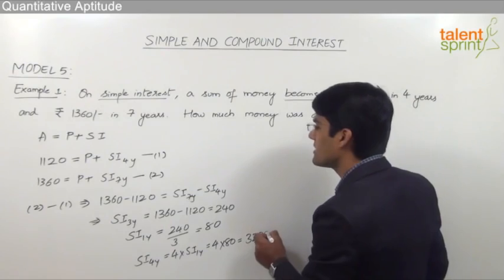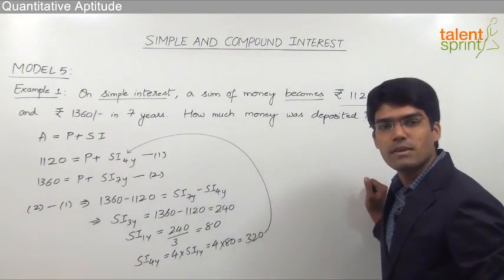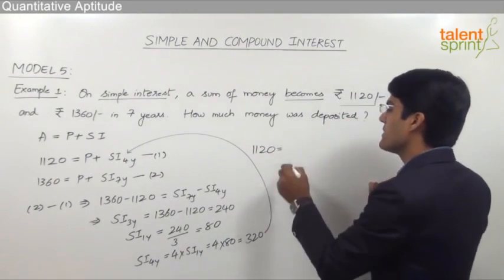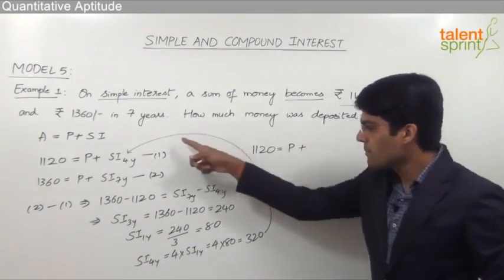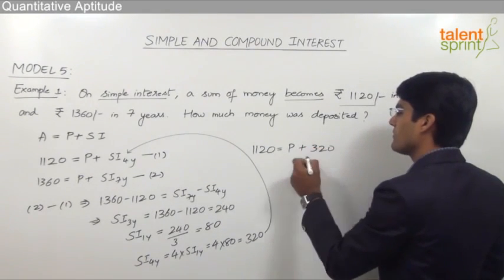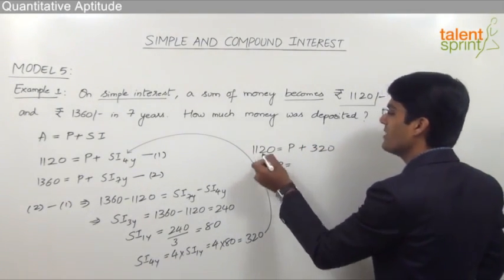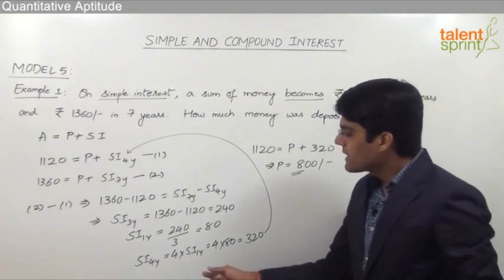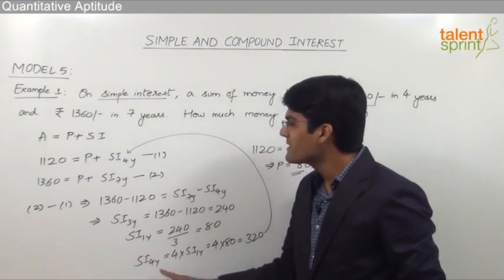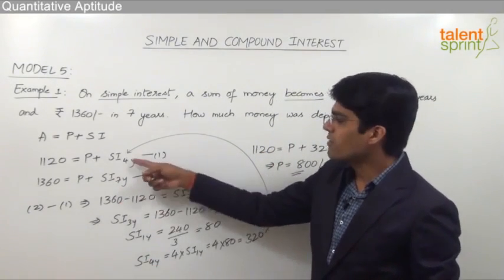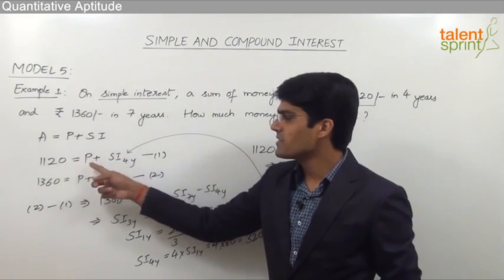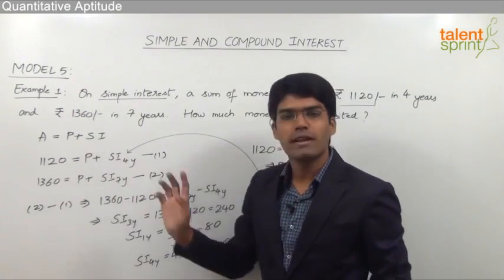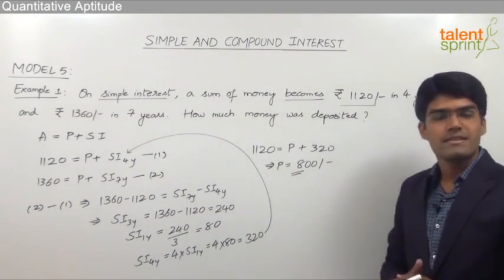Now we substitute 320 in the first equation to get the required principal. So 1120 equals principal plus 320, which gives principal equal to 1120 minus 320, that is 800 rupees. Alternatively, we could find simple interest for 7 years and use it in the second equation — in both cases the answer is Rs. 800.